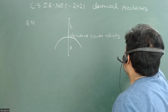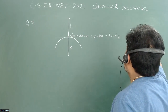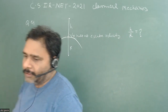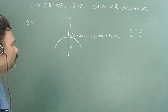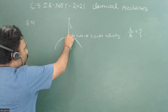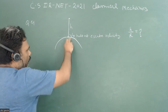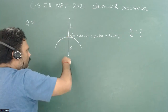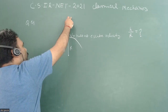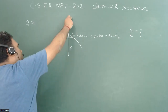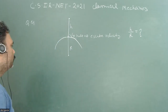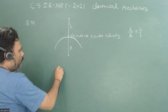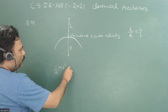We have to calculate the value of h/R. This is a straightforward problem — we just apply conservation of energy. Initially at the surface, the particle has both kinetic energy and potential energy due to radius R, and at height h the kinetic energy fully converts to potential energy.